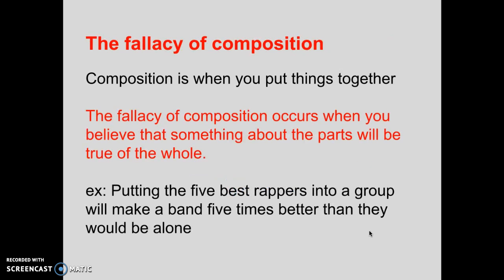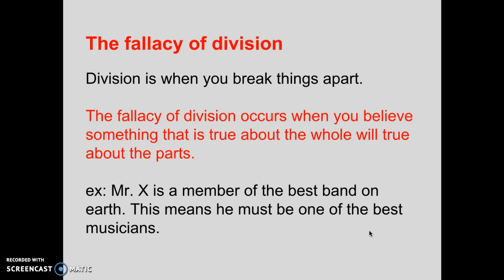The next fallacy is the fallacy of composition. Composition is when you put things together, so this fallacy occurs when you believe something true about the parts will also be true of the whole. For example, putting the five best rappers into a group will make a band five times better than they would be alone — if we look at examples of supergroups, that's clearly not true. The fallacy of division is essentially the opposite — it's when you break things apart and believe something true about the whole will also be true about the parts. For example: 'Mr. X is a member of the best band on earth, so he must be one of the best musicians on earth.'